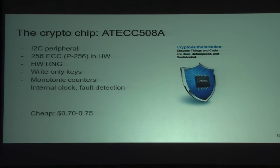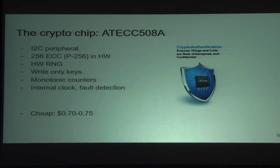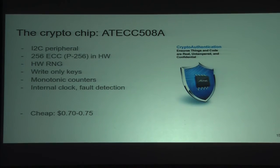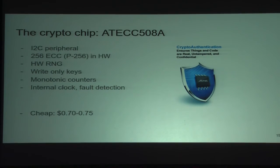The chip from Atmel is an I2C peripheral — not a microcontroller — but it checks all the boxes for U2F: random number generation, hardware acceleration for 256-bit elliptic curve. It has write-only keys, meaning it generates keys on-device using the RNG and stores them in write-only memory. It's impossible to read them off in software, which provides isolation from the firmware for the U2F application — that checks the security box. Also, they're cheap: about 70 cents per part.